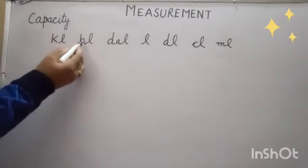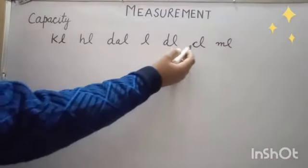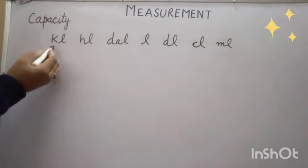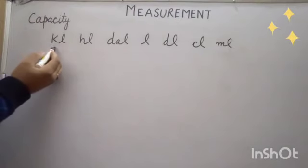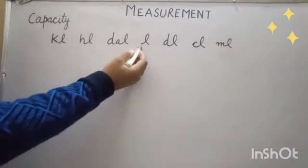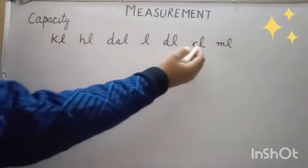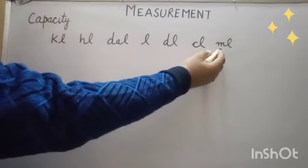There are 7 units in capacity. Kiloliter is the biggest unit of capacity. Liter is the basic unit of capacity and milliliter is the smallest unit of capacity.